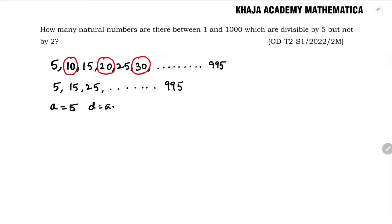Common difference A2 minus A1, 15 minus 5, which is nothing but 10. Common difference is 10. And AN is very clearly it is 995.